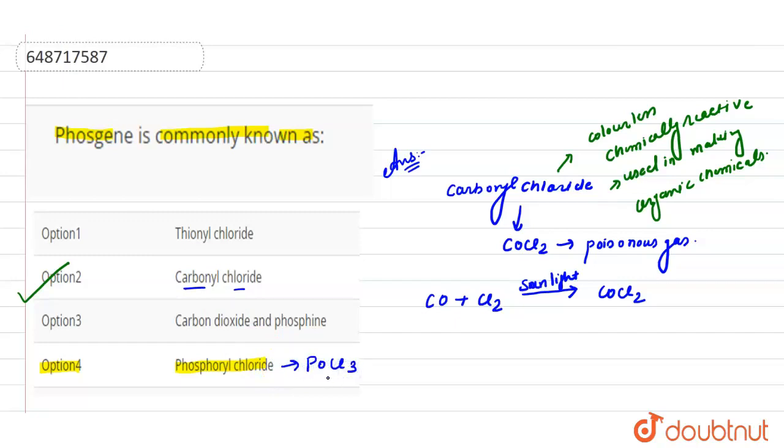It is colorless liquid with the formula POCl3 and it is hydrolysis in moist air, releasing phosphoric acid and fumes of hydrogen. So, this option clearly not commonly known as phosphine.